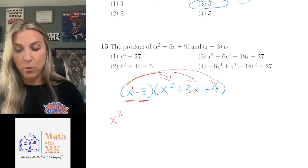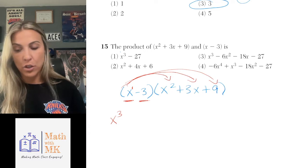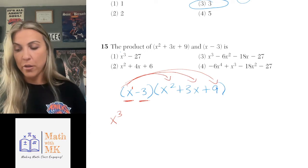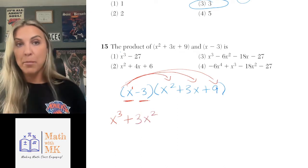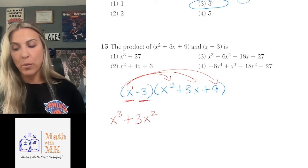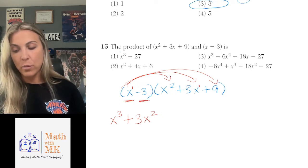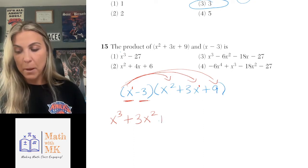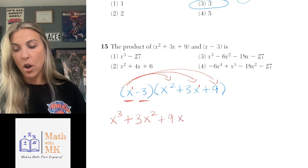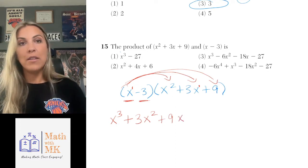I'll start by multiplying x by each of the three terms in the second parentheses. x times x squared is x cubed — when multiplying with the same base, you keep that base and add the exponents. So that's x cubed to start with. Plus x times 3x is 3x squared, again adding exponents. Then x times 9 gives me plus 9x. I've now multiplied x by each of the terms in the other parentheses.